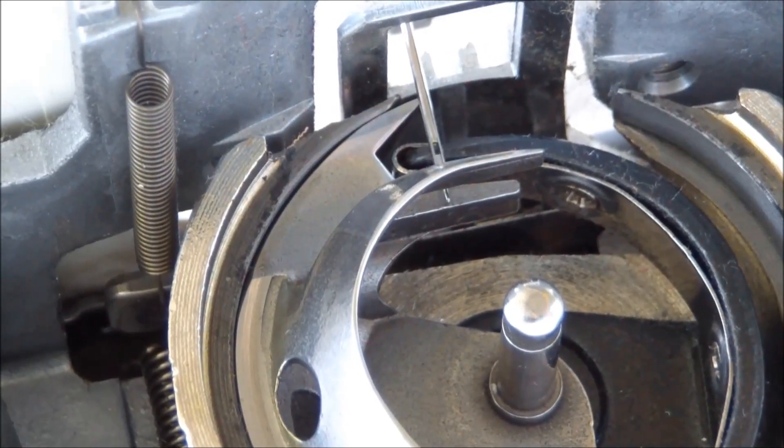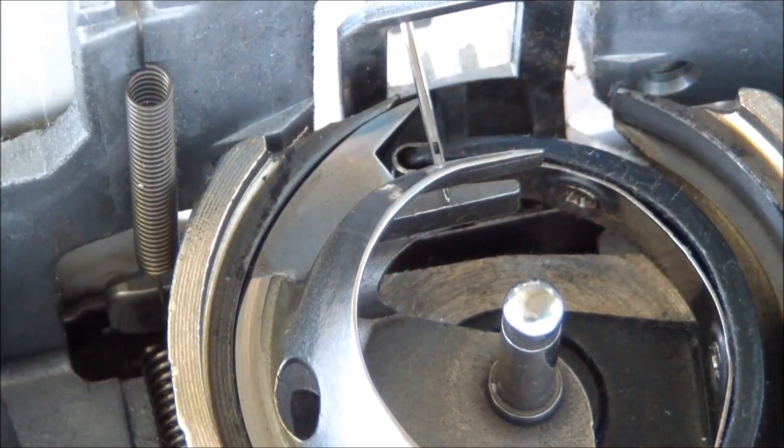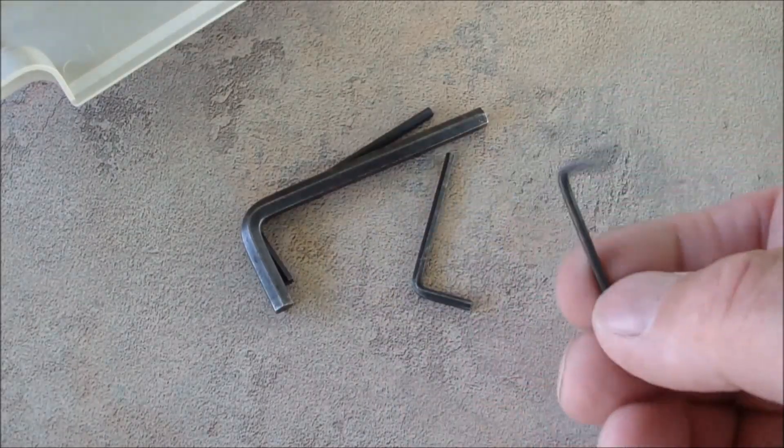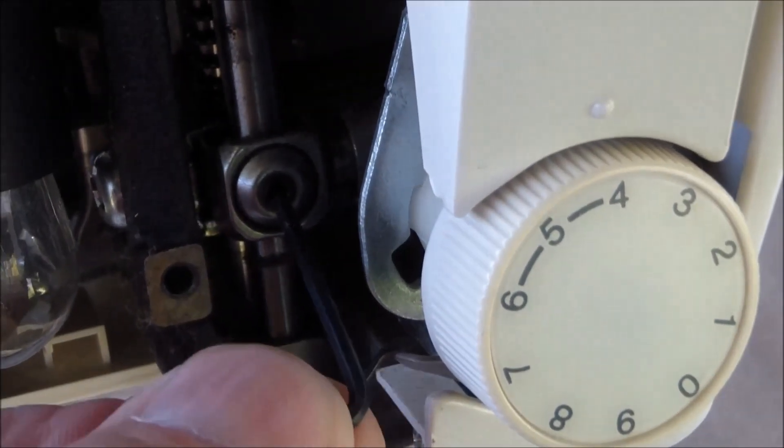Sewing machines having a zigzag stitch are adjusted on the left needle position. The hook tip at the moment of approaching the needle should be 1.5 mm higher relative to the upper part of the needle eye.